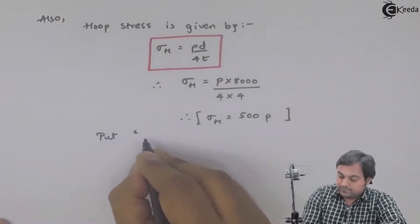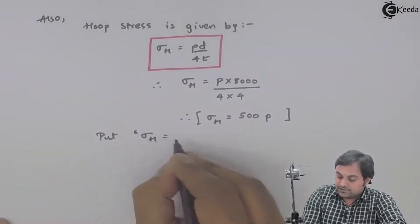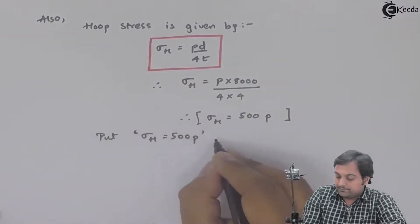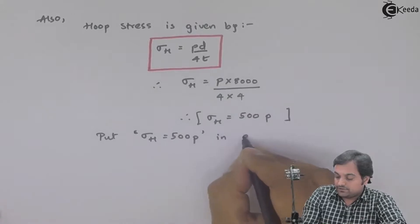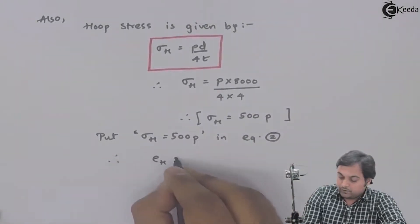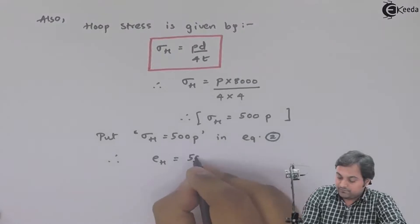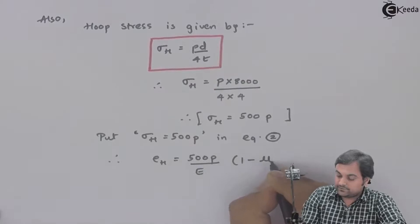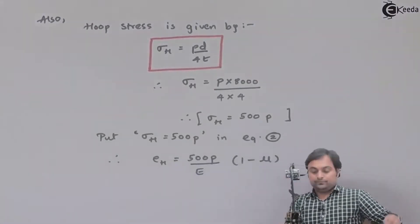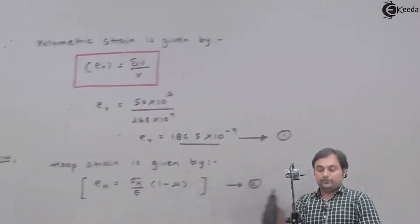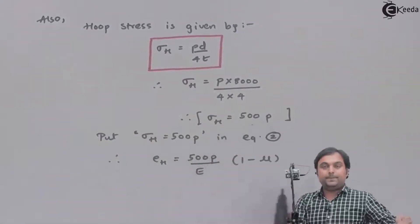Putting hoop stress = 500P into Equation 2, therefore hoop strain = 500P / E × (1 − μ). In Equation 2, I have substituted the value of hoop stress as 500P.